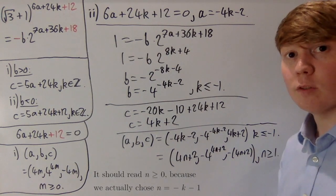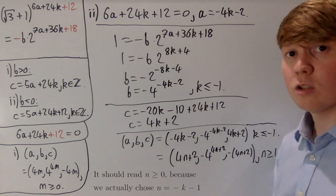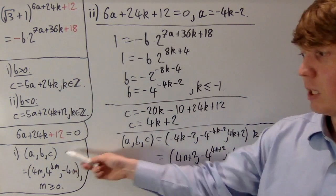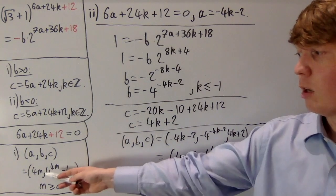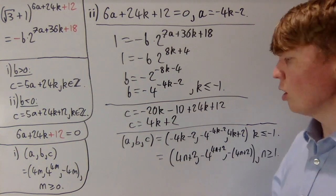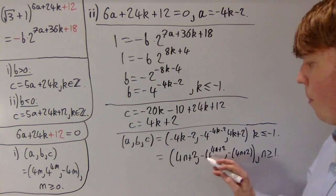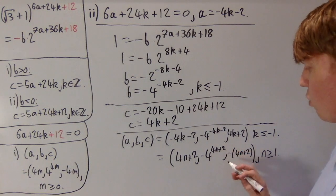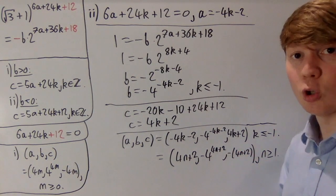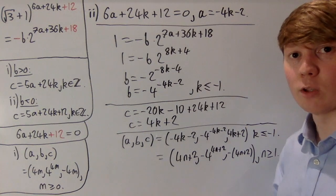We've now covered both cases and found all solutions to the original equation. In summary: (a, b, c) = (4m, 4^(4m), −4m) for non-negative integer m, or (a, b, c) = (4m+2, −4^(4m+2), −(4m+2)) for positive integer m, covering both the b-positive and b-negative cases.